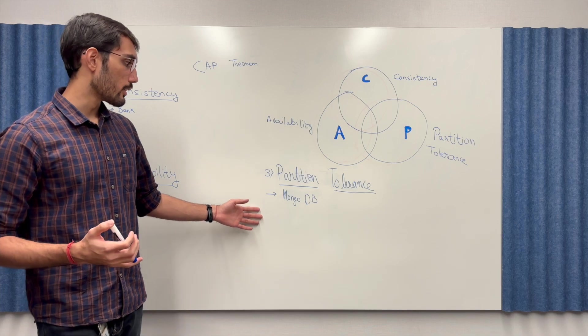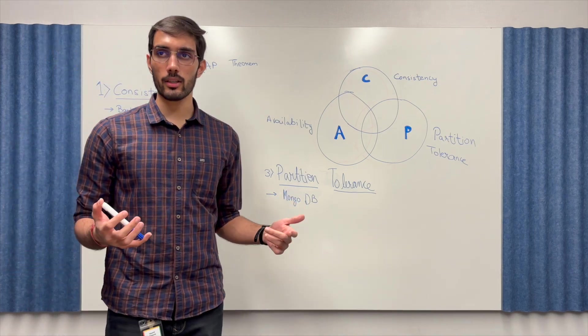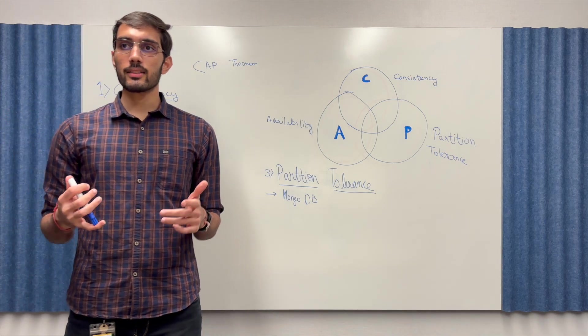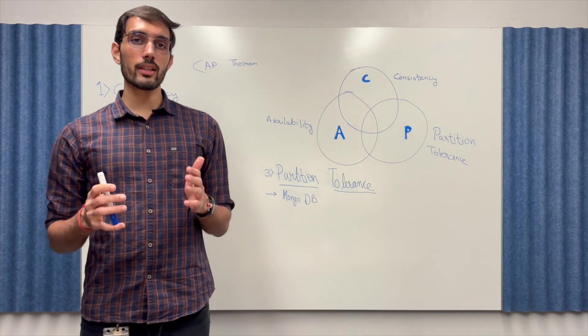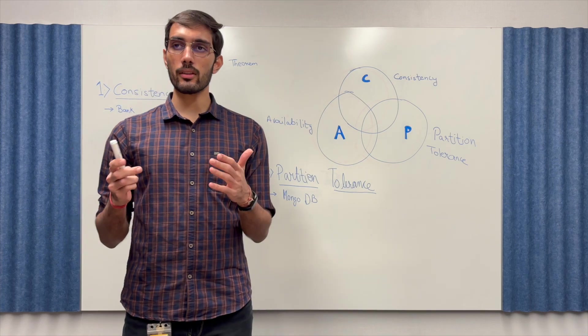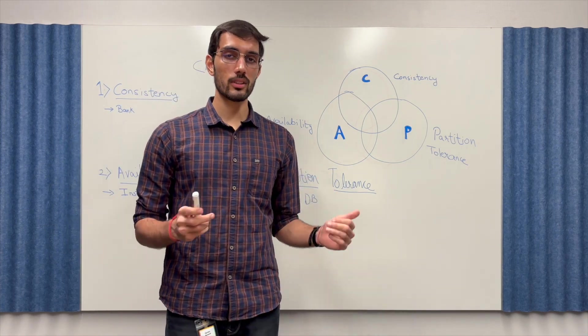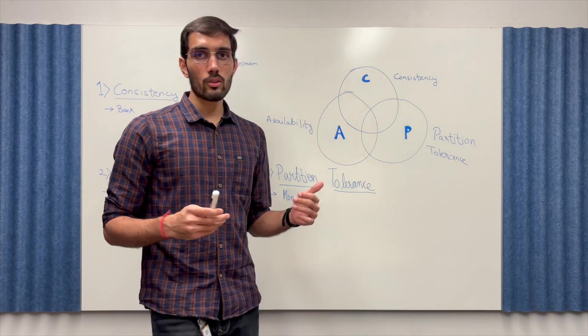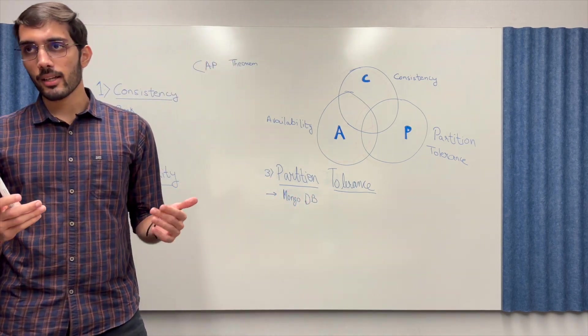Third is partition tolerance. Now this one is a little tricky to understand. What partition tolerance means is that a system continues to operate even if there's a network failure between the nodes. That means the nodes in the distributed system are split into isolated groups. So for this I'll go into a little technical example.